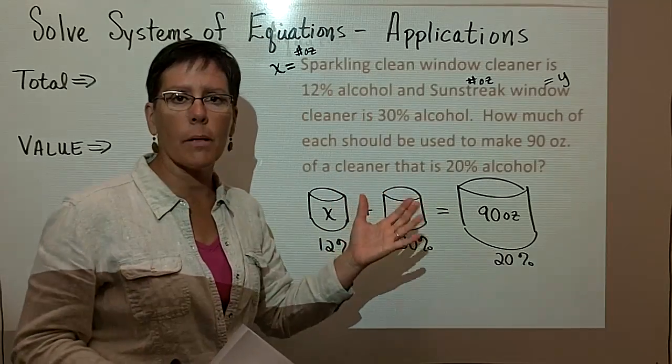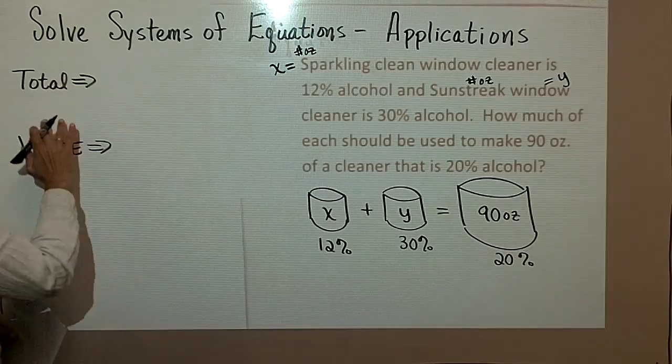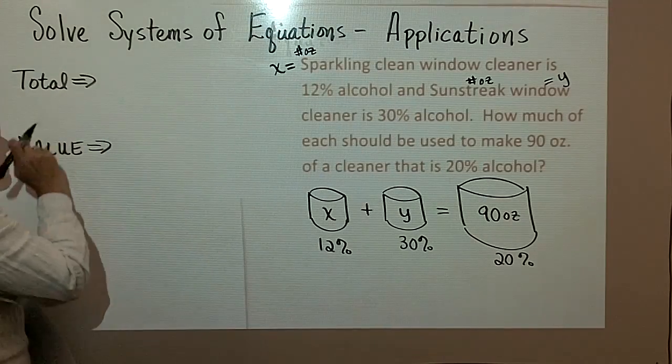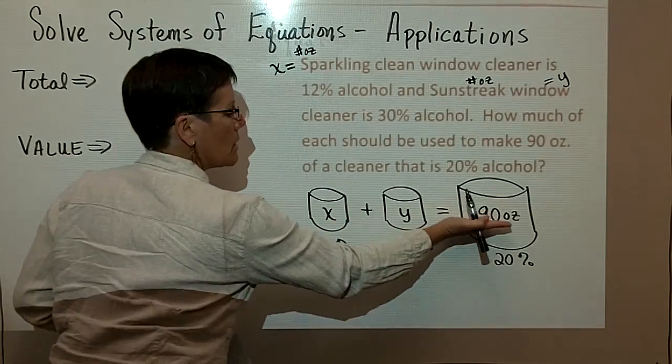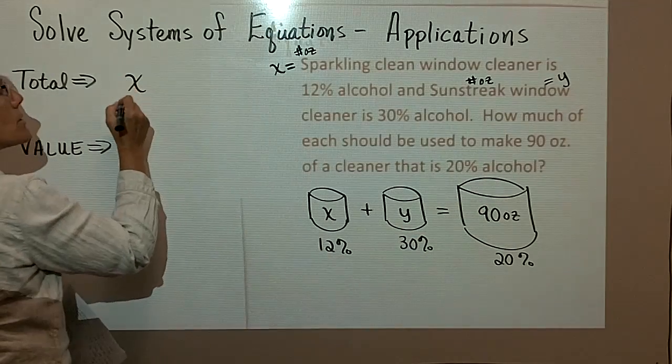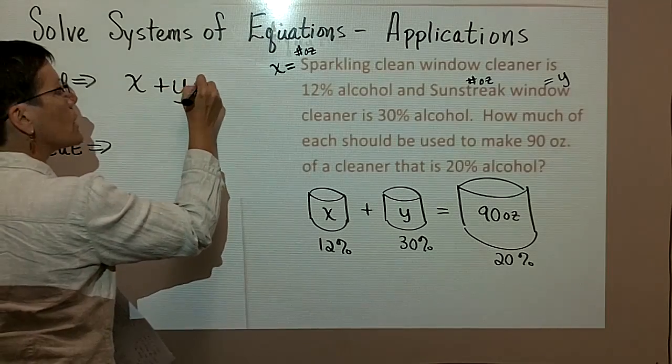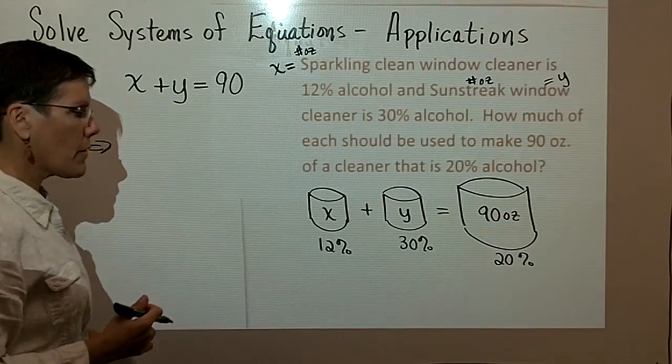I still wish that you would go to this thought. Let's write our first statement, which is our total statement. That's right across the top here of this picture. X plus Y equals 90. I have X ounces of Sparkling cleaner and Y ounces of Sunstreak window cleaner for a total of 90 ounces.